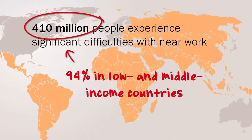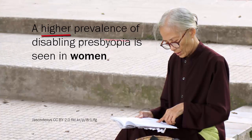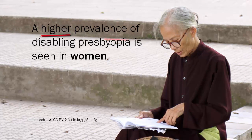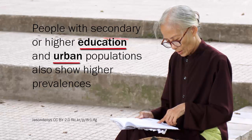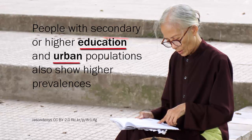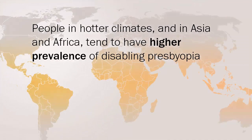Projections indicate that urgent service provision is required in order to manage the projected need for presbyopic correction in the future. We have learnt from the limited studies in this area that a higher prevalence of disabling presbyopia is seen in women compared to men. People with secondary or higher education and urban populations also show higher prevalences. Interestingly, it has also been noted that people in hotter climates, and in Asia and Africa, tend to have a higher prevalence of disabling presbyopia and earlier onset of near vision difficulties.